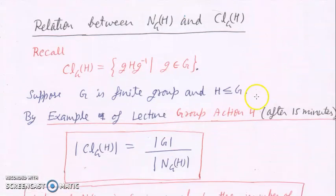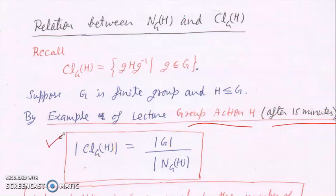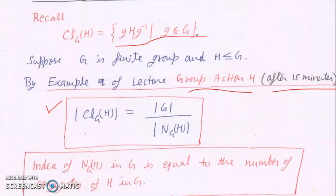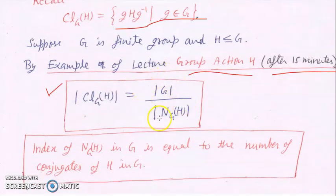Now we will see the relation between the normalizer of H in G and the conjugacy class of H in G. As proved in the group action lecture, the order of the conjugacy class of H in G equals the order of G divided by the order of the normalizer of H in G, where G is a finite group. The conjugacy class of H in G is the set of subgroups of the form gHg⁻¹. Since the normalizer is a subgroup, this ratio is the index of N(H, G) in G. So the index of the normalizer of H in G equals the number of conjugates of H in G.